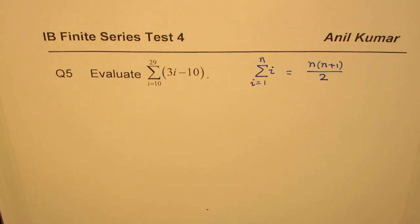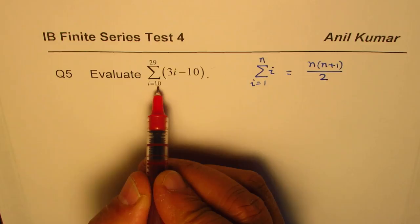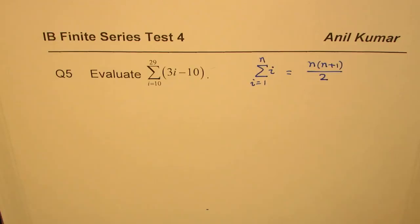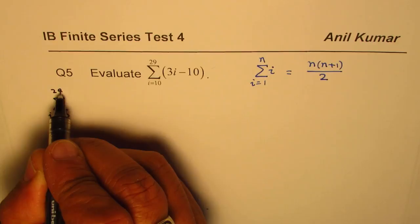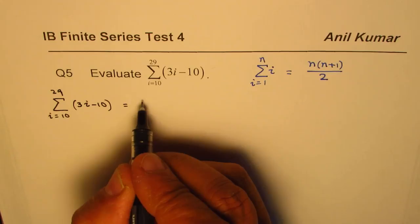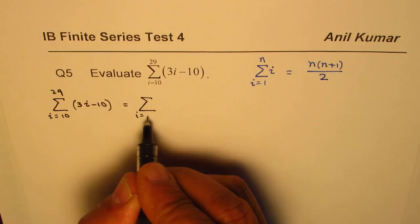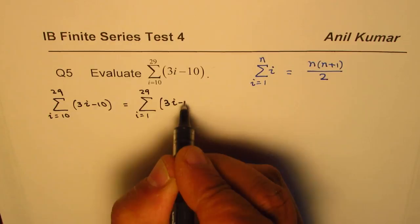Here is the solution for this question. Now one thing which is very critical to notice is that the lower limit is 10, not 1. So that makes a huge difference. In such cases, what should we do? That really means that the sum from i equals 10 to 29 for 3i minus 10 can be found by first finding the sum of first 29 terms, that is i equals 1 to 29 of the same thing which is 3i minus 10.